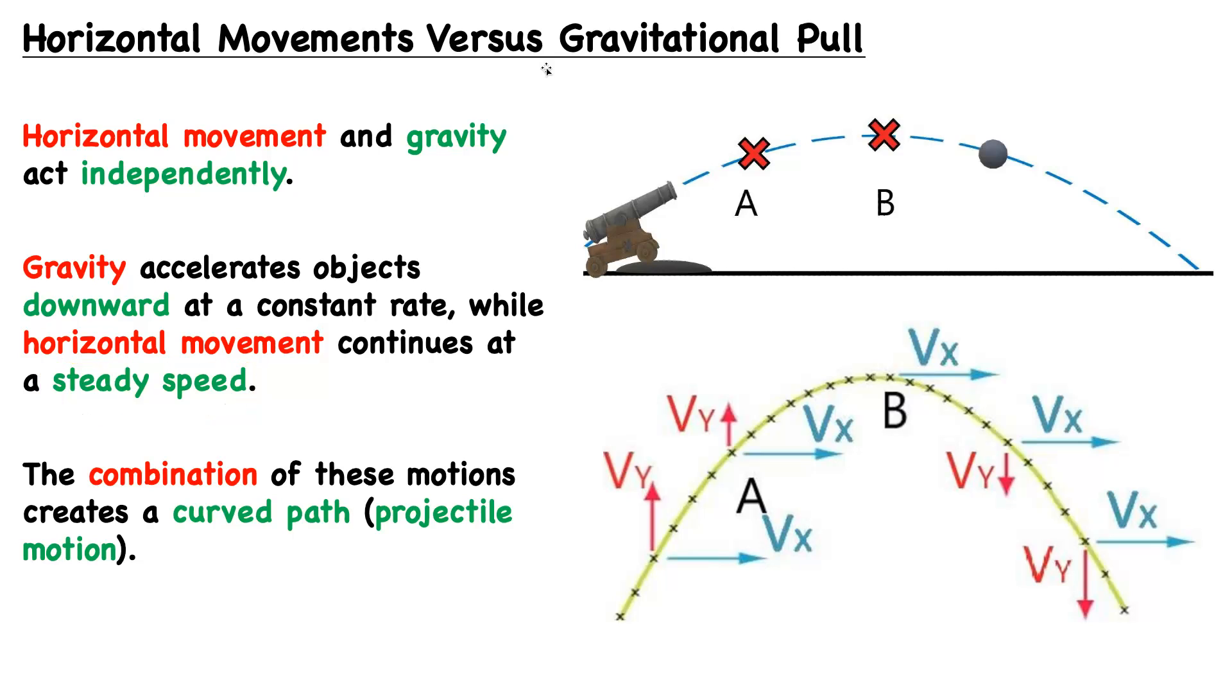It is a combination of these motions that creates a curved path, which is what we call projectile motion. So we can take a look at an example.